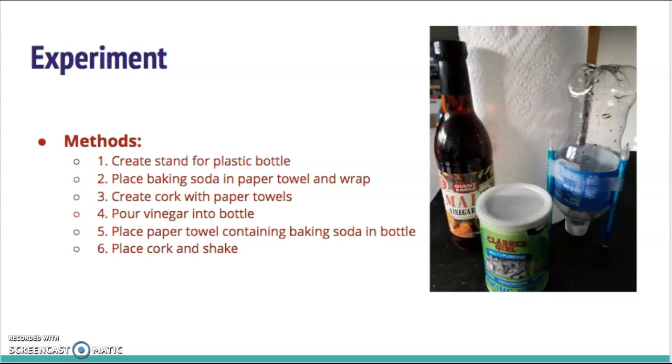For this week's experiment, we need a plastic bottle, vinegar, baking soda, paper towels, and some type of pens or pencils to create a stand for your plastic bottle, which will eventually turn into the rocket. The methods are: number one, create a stand for the plastic bottle. I did this by turning the plastic bottle upside down and taping pencils around the outside to create an elevated stand.